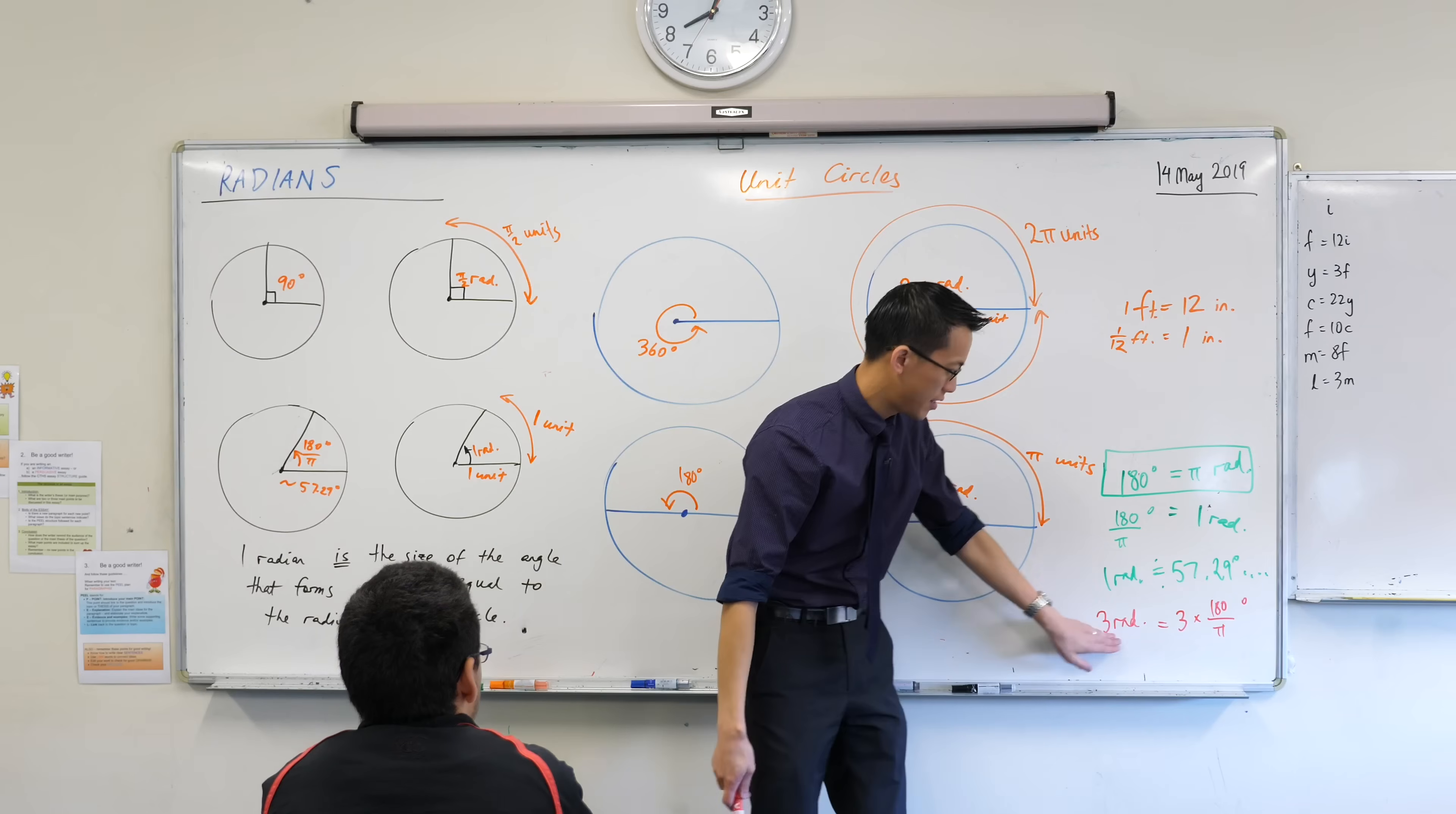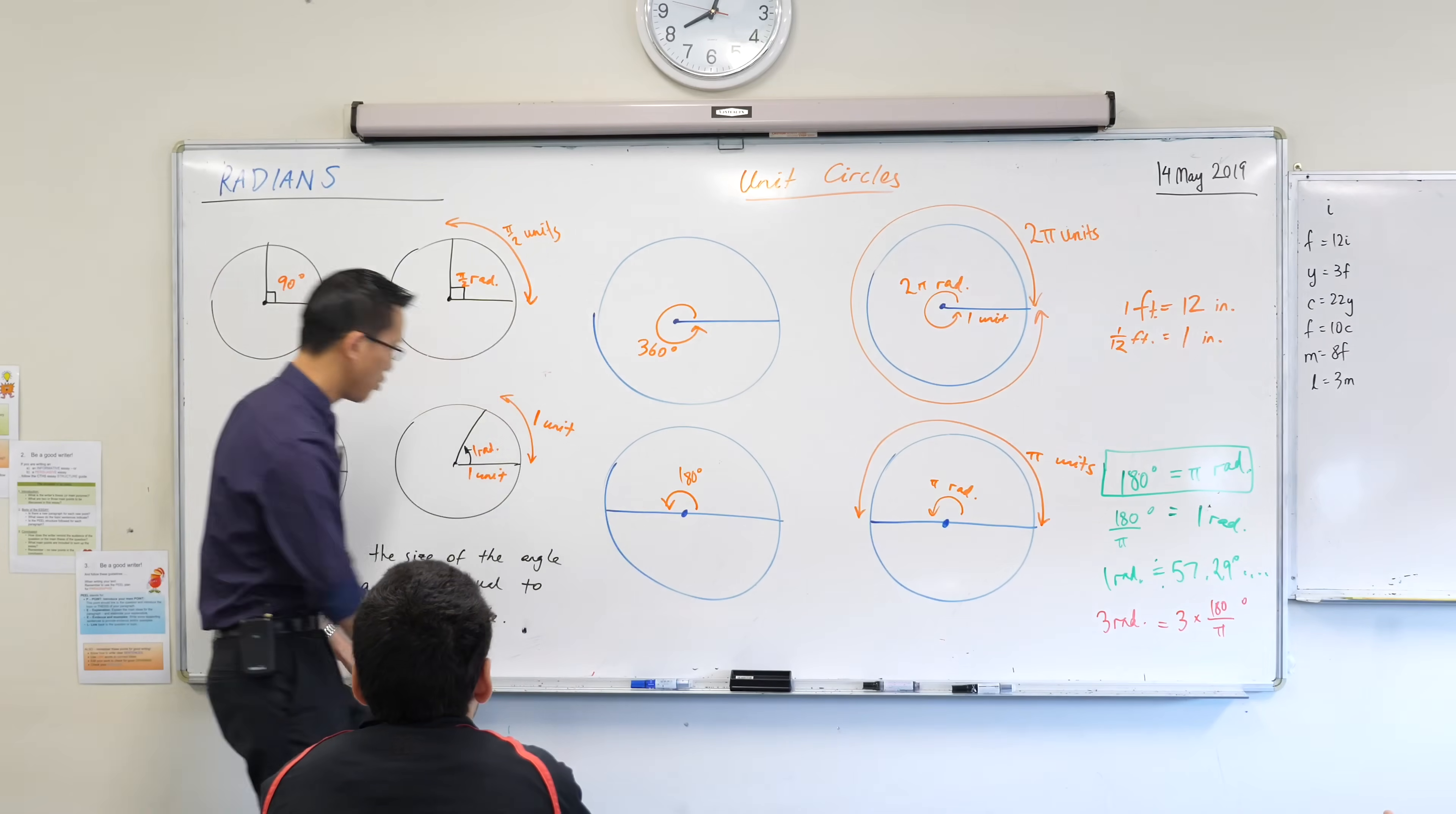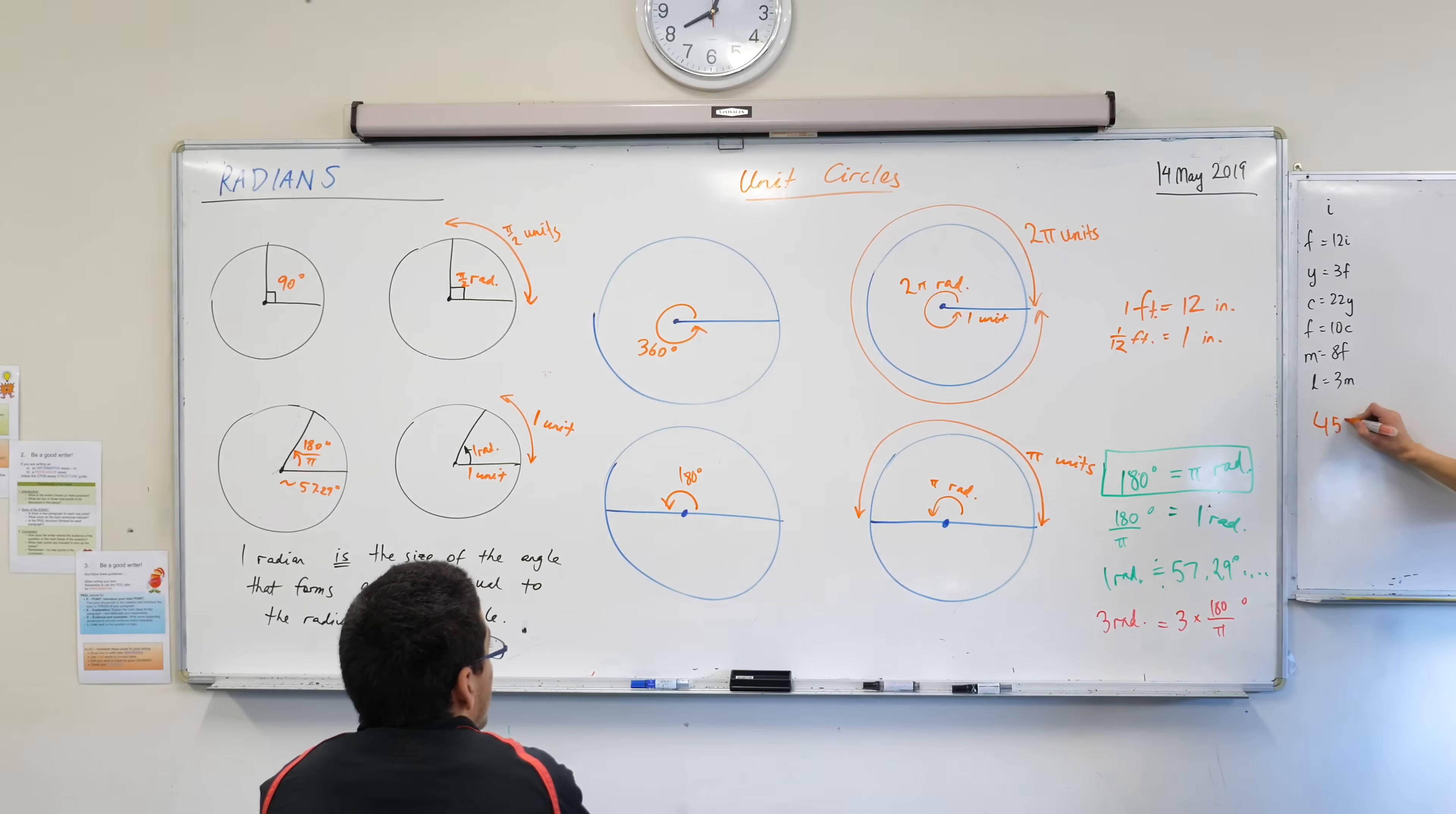So if I said instead of three radians, I wanted eight radians, I'd say, well, eight times 180 on π. If I wanted to go in the other direction, which is actually going to be a bit more common for us right now, because we're good at degrees, right? If I said to you, we've done some nice, convenient angles, 360, 180, 90, what's another common angle that you deal with all the time in degrees? A common angle you see? 45. 45, sure. This will do. 45 degrees.